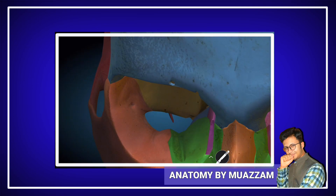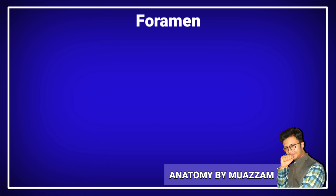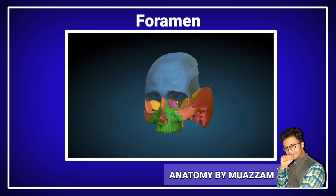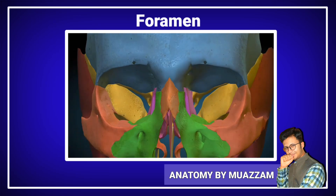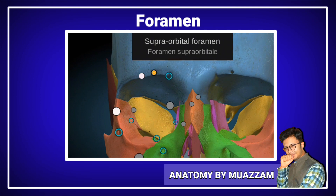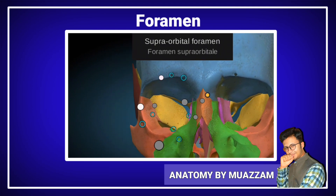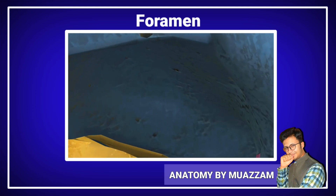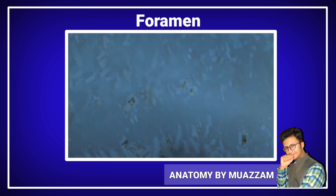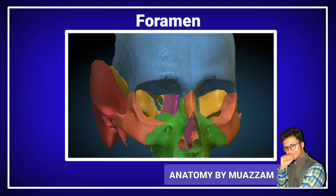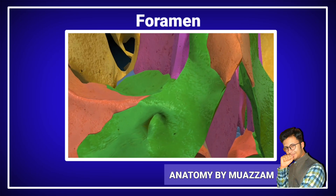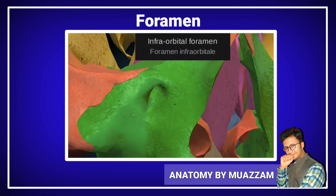The foramen. There are many foramina in the human skeleton. We will discuss the foramina located near the orbital of the skull. The supraorbital foramen is present on the superior wall of the orbital, on the superior part. The infraorbital foramen is present in the inferior part of the orbital.